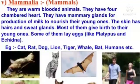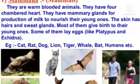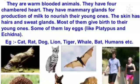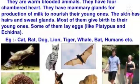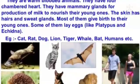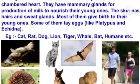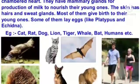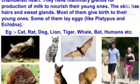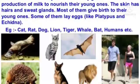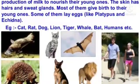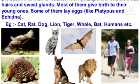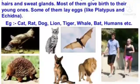Mammalia: they are warm-blooded animals with a four-chambered heart. They have mammary glands for production of milk to nourish their young ones. The skin has hairs and sweat glands. Most of them give birth to their young ones, though some lay eggs. Examples: cat, rat, dog, lion, tiger, whale, bat, humans, etc.